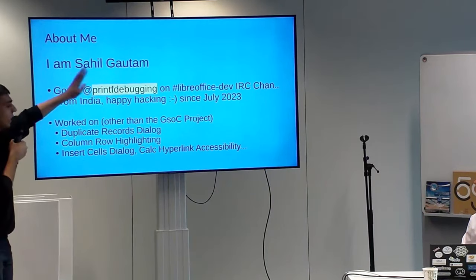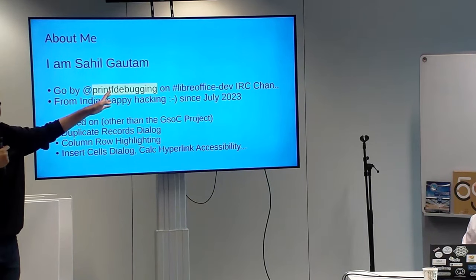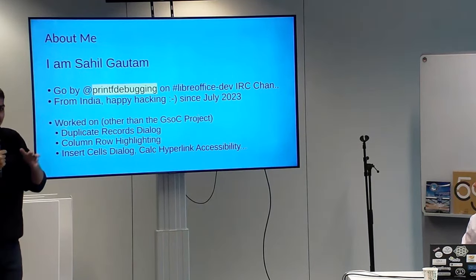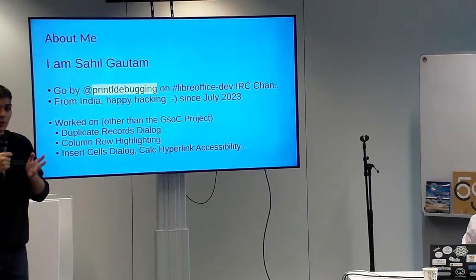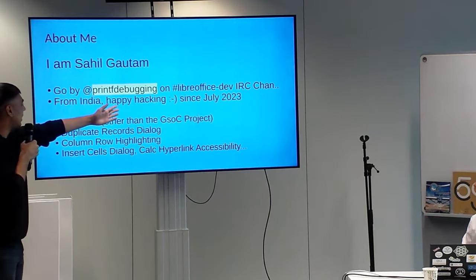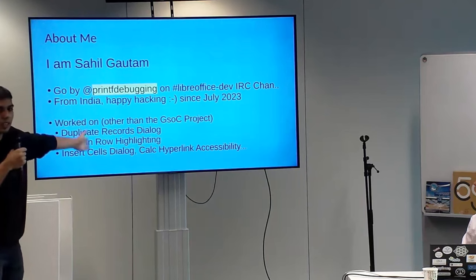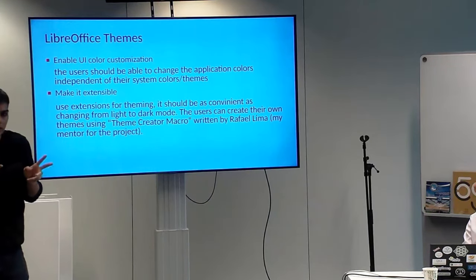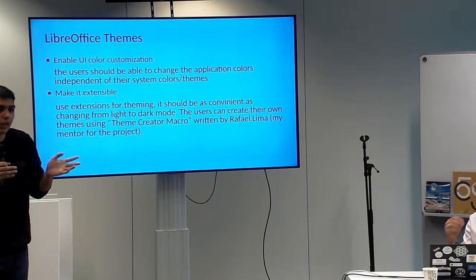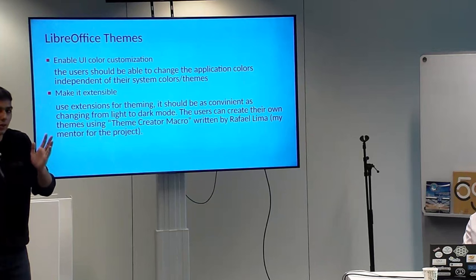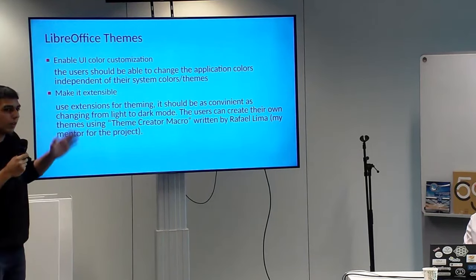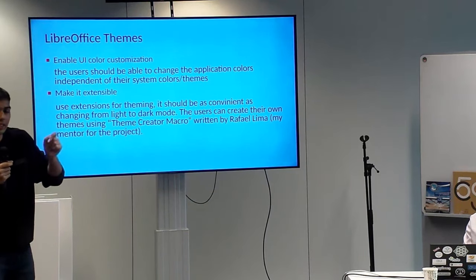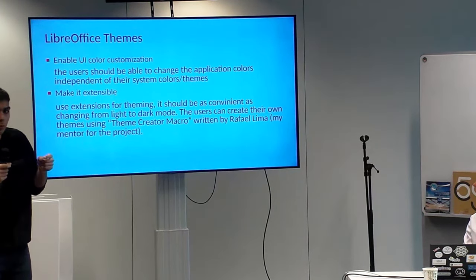Now Sahil presents his full project. The project had two parts: first, enabling color customization so the user can tweak each UI color component; and second, making it available via an extension — so instead of changing each color by hand, the user can install an extension and change the theme. It works most of the time. This is how GTK looks by default on a fresh Arch Linux install, and after applying an extension theme. There are some issues — shadows overlapping with fonts — which will be fixed as feedback comes. The feature is not enabled by default; users have to opt in.